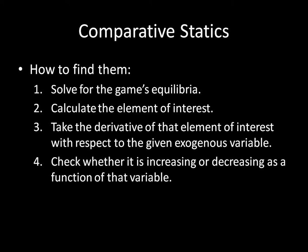The way we calculate Comparative Statics is a four-step process. This might seem burdensome at first, but each step isn't particularly difficult. As long as we go through things carefully one by one, we shouldn't have much of a problem. Step one: solve for the game's equilibria. Step two: calculate the element of interest. Step three: take the derivative of that element with respect to the given exogenous variable. Step four: check whether it is increasing or decreasing. Step three requires a bit of calculus — this is the video where that comes up.